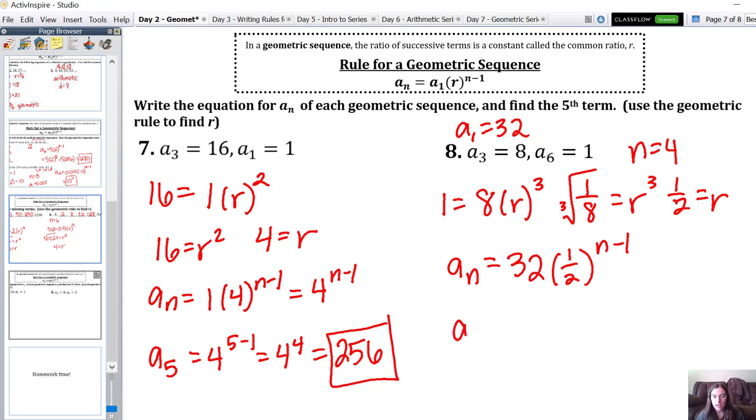For a sub 5, I'm going to use 32 times 1 half to the 5 minus 1, which is 4. And I can put that in my calculator, 32 times 1 half to the power of 4, which is 2.